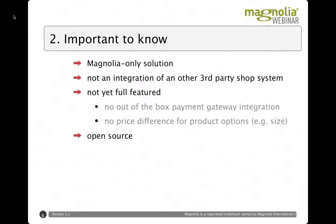It's important to know that this is a Magnolia-only solution. We are not integrating any third-party shop system — everything is in there as an open source extension to Magnolia. One has to say it is not fully featured yet: for instance, we don't have a payment gateway out of the box. Also, product options currently have no way to influence the price — if you have a sweatshirt and want to charge more for XL and less for XS, you'd have to create separate products. But it's open source, so you can extend it as needed.